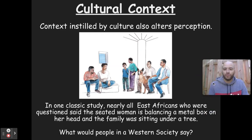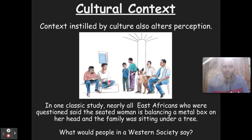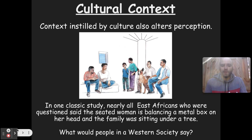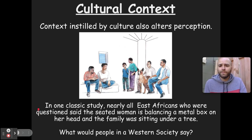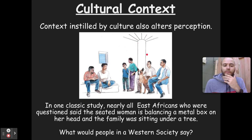Another example of context effects is cultural context, instilled by our culture, which alters our perceptions. In a classic study, they showed an image to different cultures. Nearly all East Africans questioned said the seated woman was balancing a metal box on her head, and the family was sitting underneath a tree — because that's the context from which they come. But someone from a Western society might say the woman is sitting beneath a window and the family is near a pillar holding up a building. Different cultural upbringings instill different contexts and different ways to perceive information.